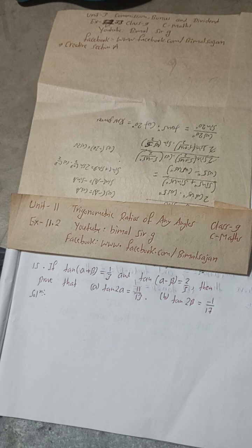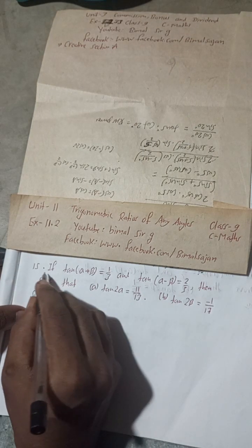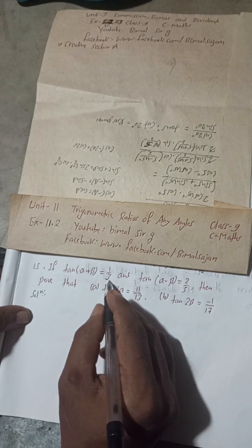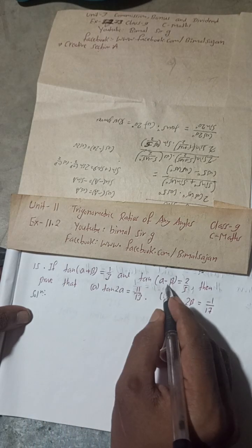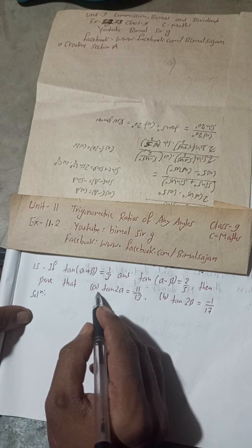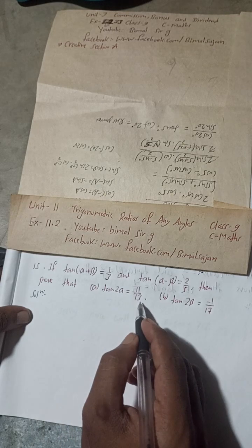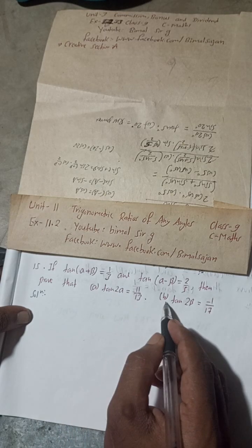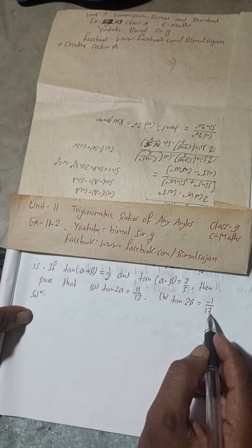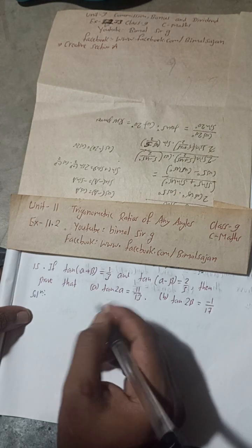Now let's move to the solution. Question 15: If tan(α+β) = 1/3 and tan(α−β) = 2/5, then prove that (a) tan 2α = 11/13 and (b) tan 2β = −1/17. Let's first solve part (a).